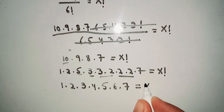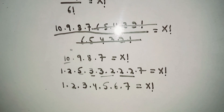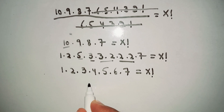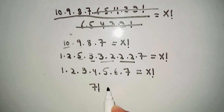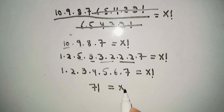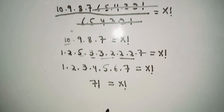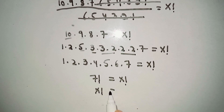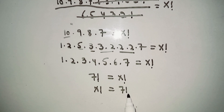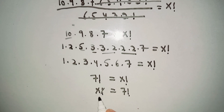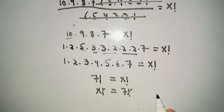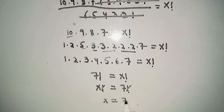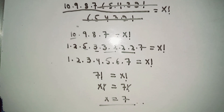So this whole product equals 7 factorial, which equals X factorial. Canceling factorial from both sides, we get X equals 7. This is our answer.